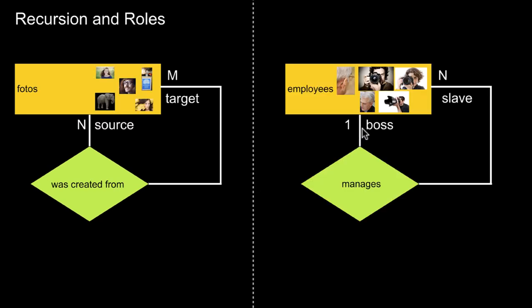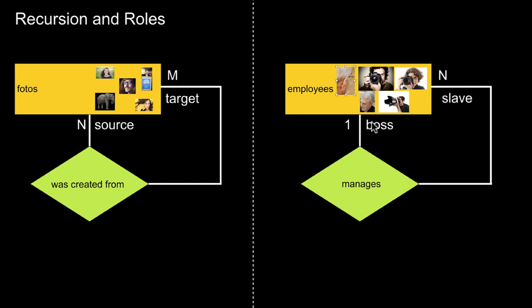Back to the recursion example: assume you have an employees entity set with people at different levels in a hierarchy — some are managers. You can model a hierarchical relationship using roles: one side is labeled 'boss' and the other 'slave.' So the boss manages slaves, and a slave is managed by a particular boss. Roles make the reading direction much, much clearer in recursive relationships.